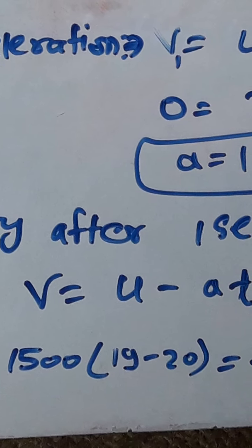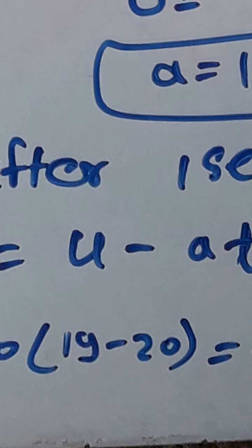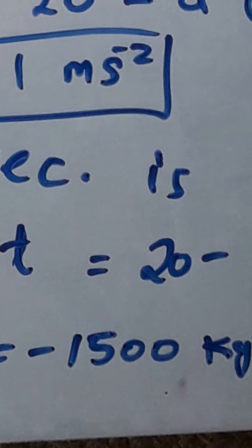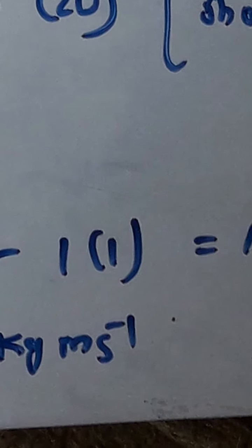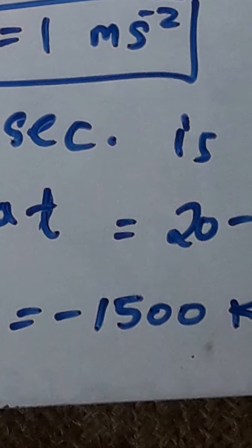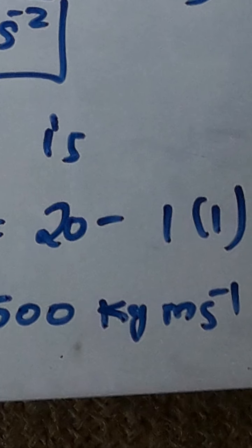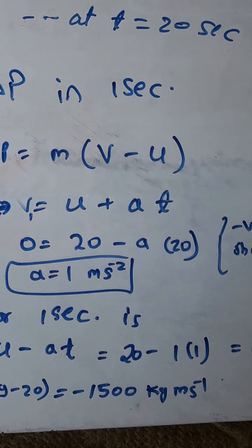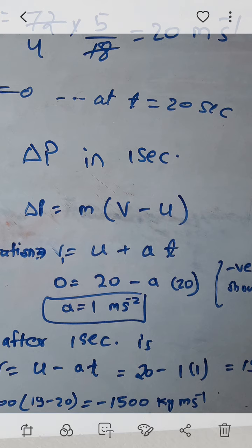Change in momentum is mass times (final velocity minus initial velocity). The final velocity we got is 19. So (19 - 20) × 1500 = -1 × 1500 = -1500 kg·m/s. That's our change in momentum after 1 second. I hope everyone is clear. Thank you for watching.